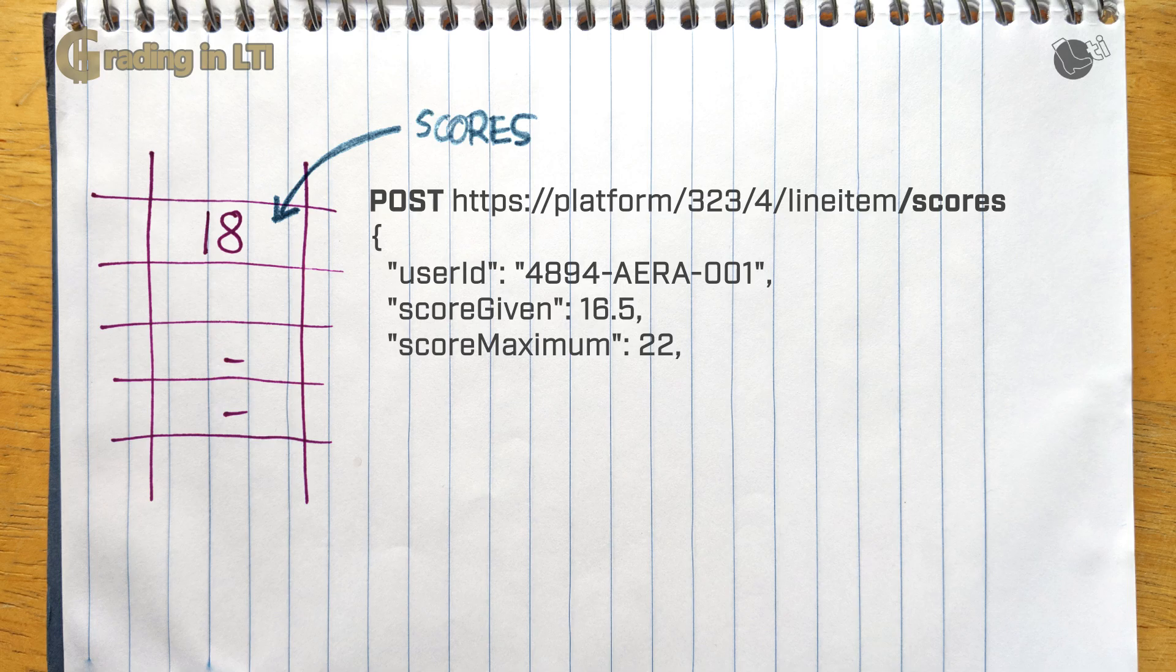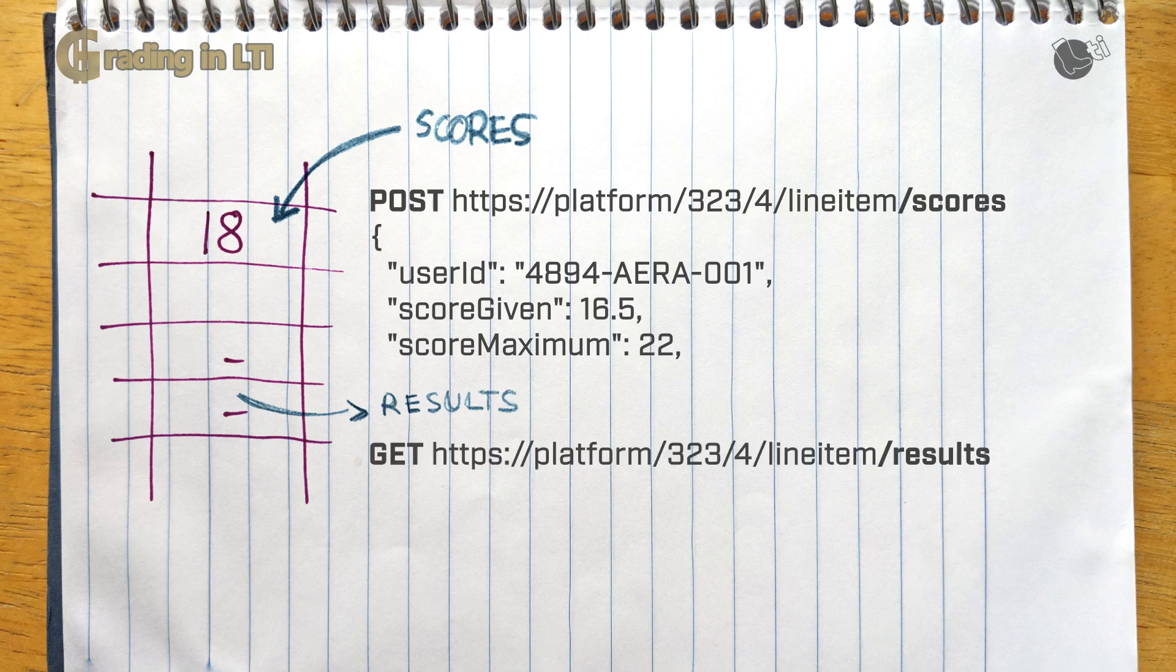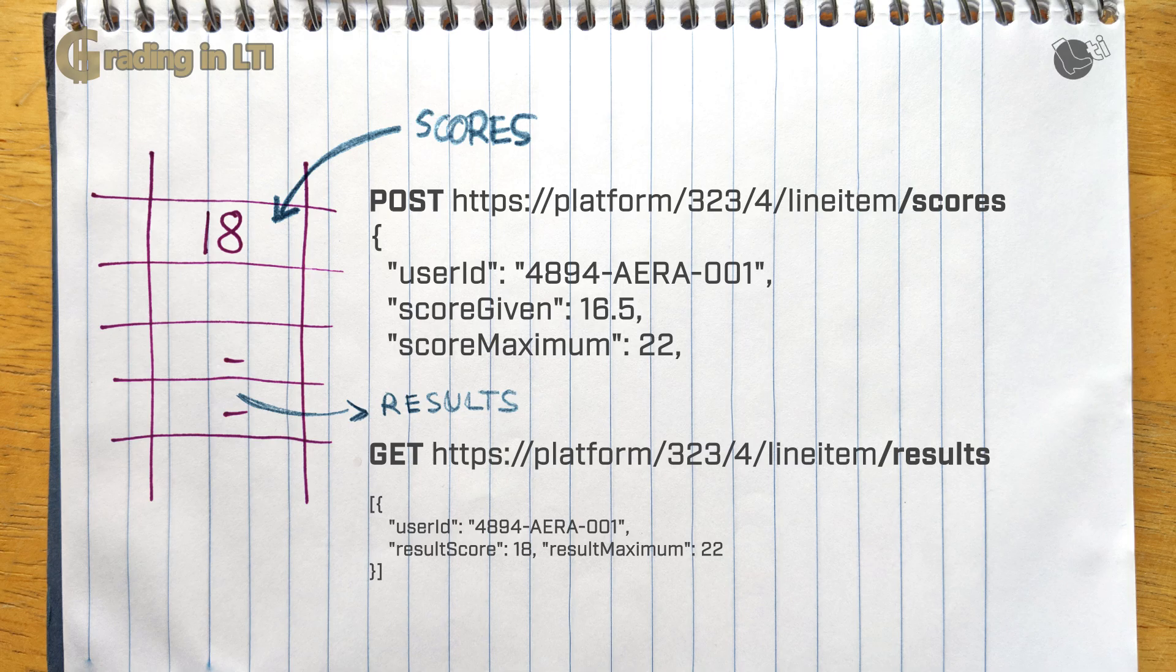Or there may be some other logics that may have been applied that affected the final score. So if you want to show in your tool the current grade as currently shown in the gradebook, then there is a call to get results back from the platform. So just tap on results instead of scores, to the path, and you will get the result as shown in the gradebook. Now results would show you the grade as currently in the gradebook, which can differ from the grade you send for many reasons, as we just mentioned. If you care to only get a single result grade, you can apply an additional filter as a query parameter, which is your user ID, in which case you only get a result for a single user.